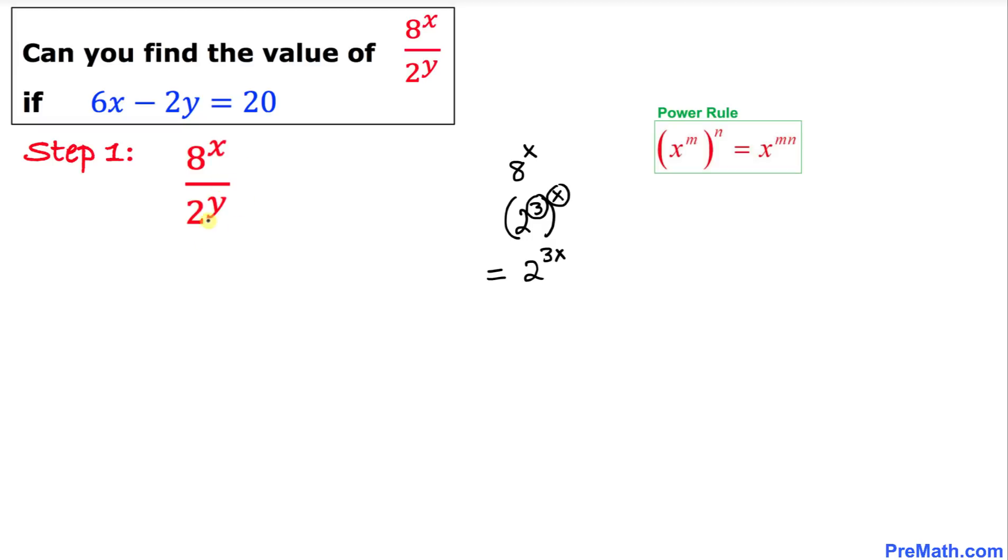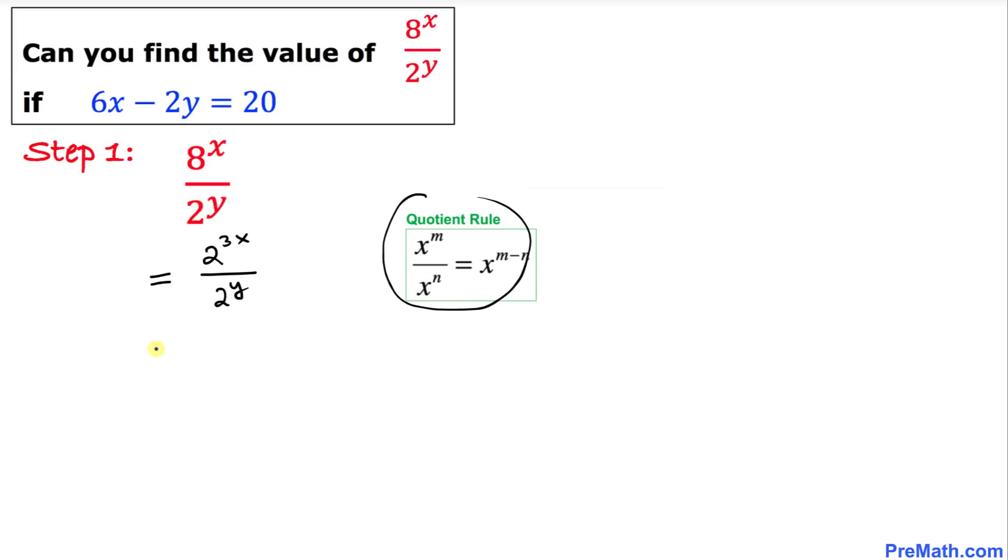Now let's focus back on our original problem. This ratio can now be written as 2^(3x) divided by 2^y, and now we're going to use the quotient rule.